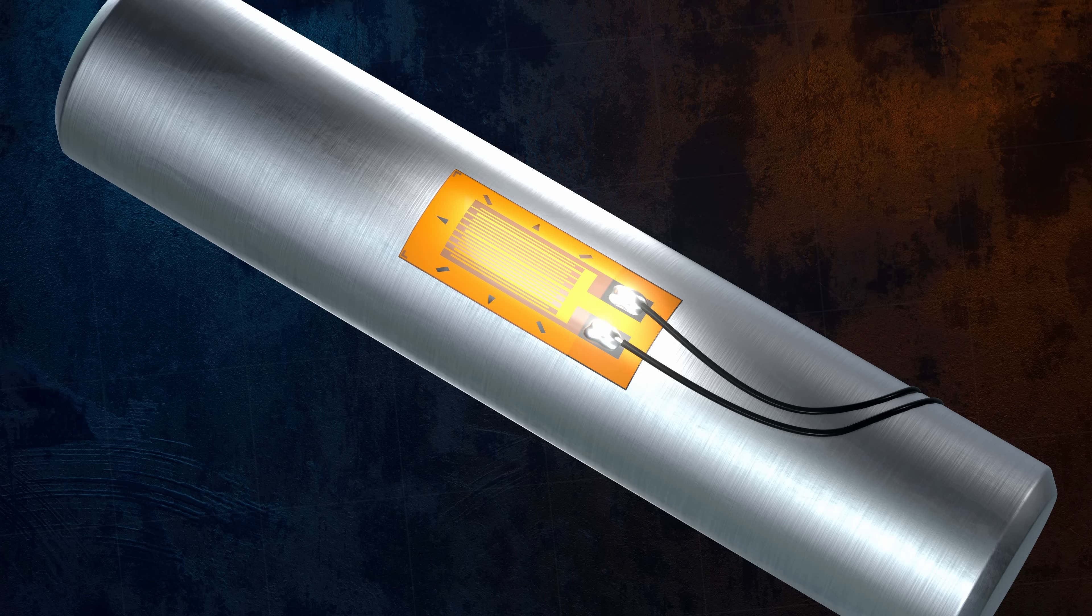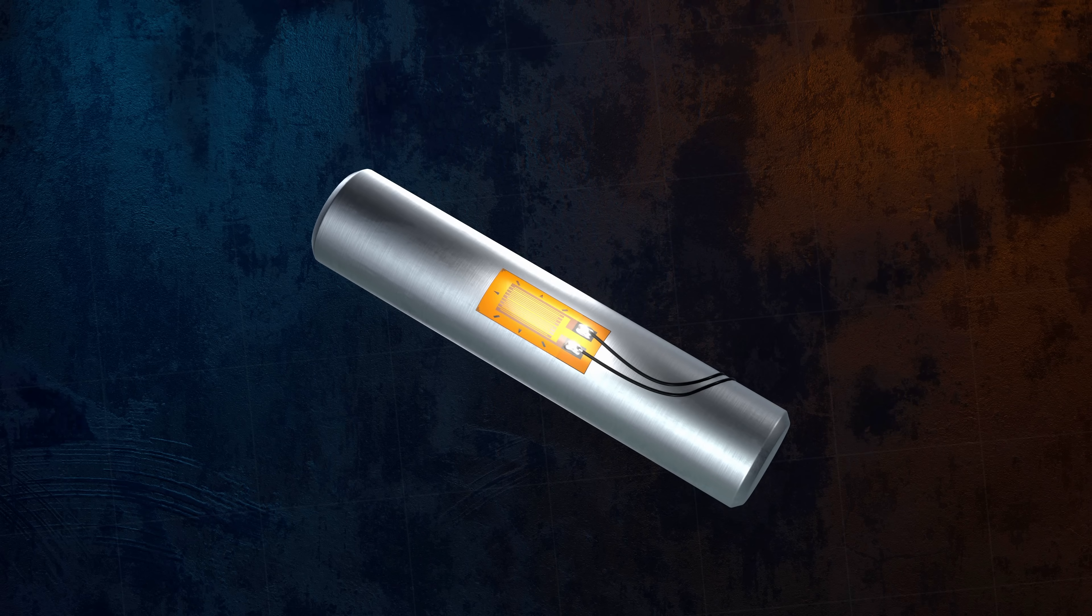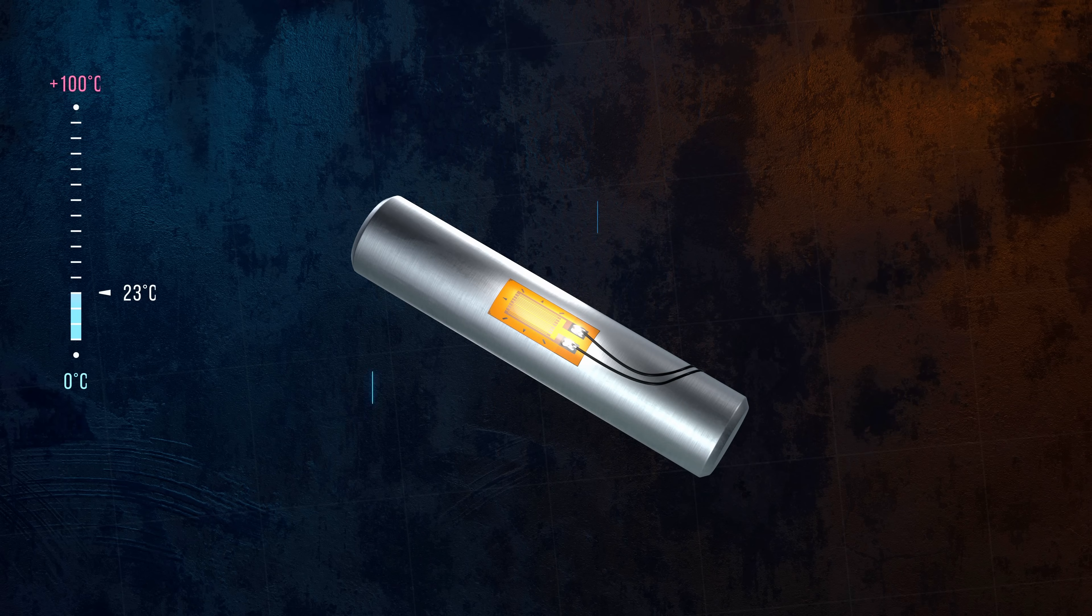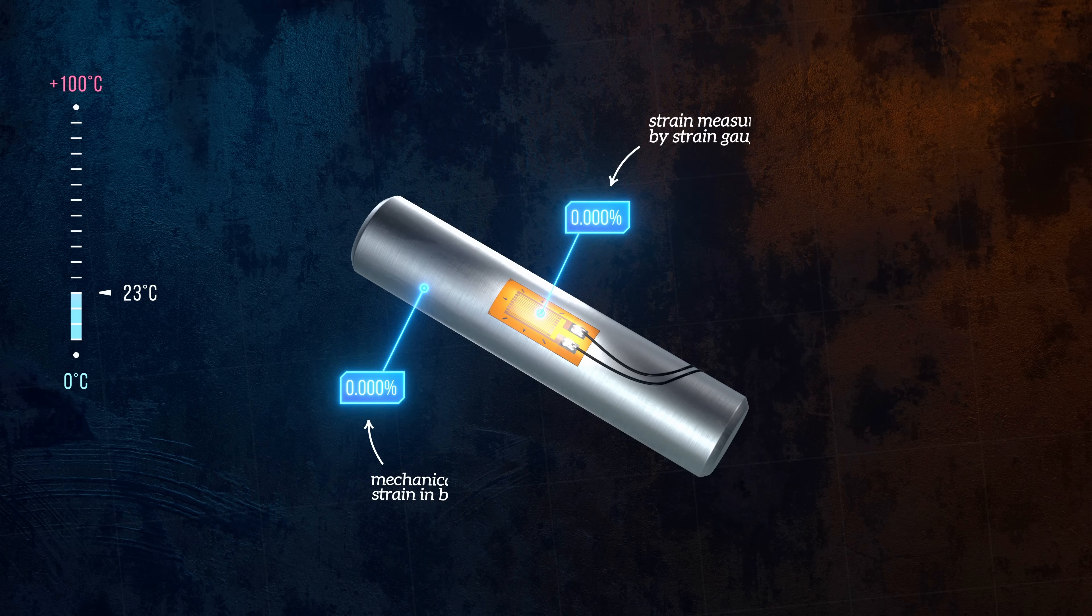This means that any changes in temperature will induce a strain in the foil grid due to differential thermal expansion that gets added to the strain we're actually trying to measure.